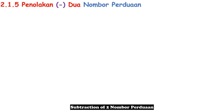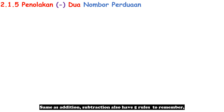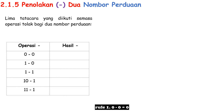Subtraction of two Nombor Perduaan. Same as addition, subtraction also has five rules to remember. Rule 1: 0 − 0 = 0. Rule 2: 1 − 0 = 1. Rule 3: 1 − 1 = 0. Rule 4: 10 − 1 = 1. Rule 5: 11 − 1 = 10.